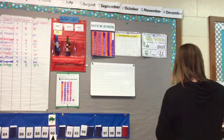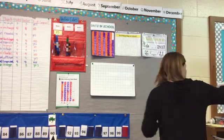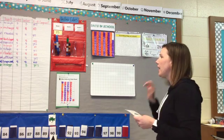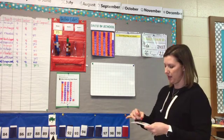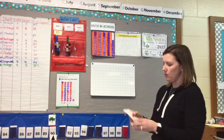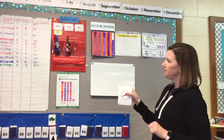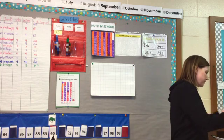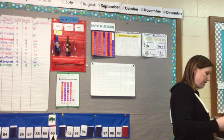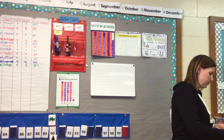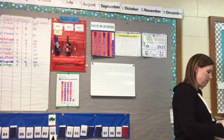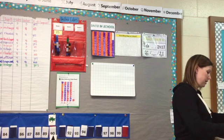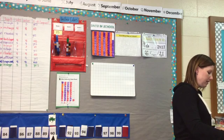Let's spin our spinner. We'll spin for yesterday and then for today. Spinning for yesterday, we landed on 8, so we need to add 8 unifix cubes. I'm going to take 8 out of my bin: 1, 2, 3, 4, 5, 6, 7, 8.